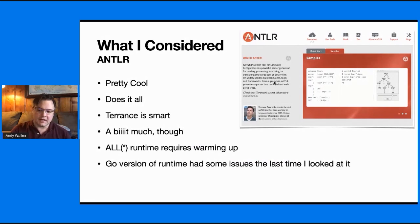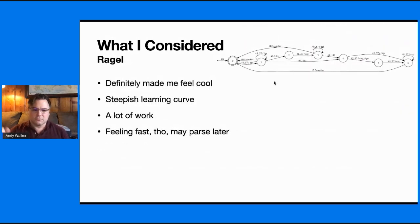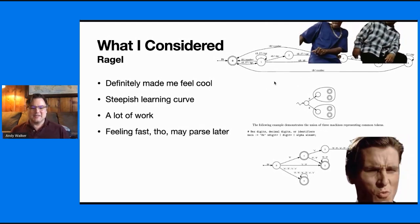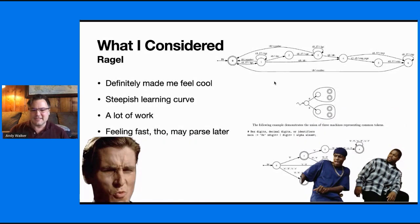So I considered Antlr, which is pretty cool. It does a lot of stuff. Terence is wicked smart. It's a bit much though. It's pretty heavy. The Antlr runtime requires some warming up. And at the time I kind of initially looked at it, the Go version of the runtime had some issues. So I moved on. I also considered Ragel, right? It's so cool, state machines. It definitely made me feel cool. But it's got a bit of a steep learning curve. It can be super duper fast though.